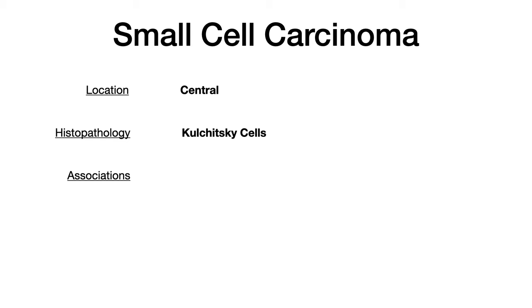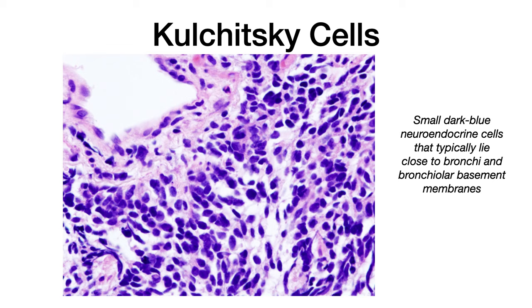For small cell carcinoma, this is centrally located. The big histopathology that you want to look for is Kulchitsky cells. Kulchitsky cells are small, dark blue neuroendocrine cells that, specifically in small cell carcinoma, will lie close to the bronchi and the bronchiolar basement membranes. If you're taking your exam and you see these really dark purple cells, those are Kulchitsky cells — neuroendocrine cells.